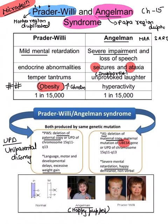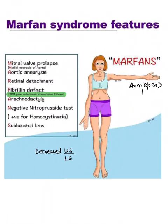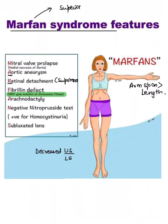Moving to Marfan syndrome: if you see an image of an excessively tall person whose arm span is much greater than their height, that's Marfan syndrome. There is a defect in the FBN1 gene — fibrillin-1 — present on chromosome 15. Mnemonic MARF: M = mitral valve prolapse, A = aortic aneurysm, R = retinal detachment, F = fibrillin defect — FBN1 gene mutation on chromosome 15.